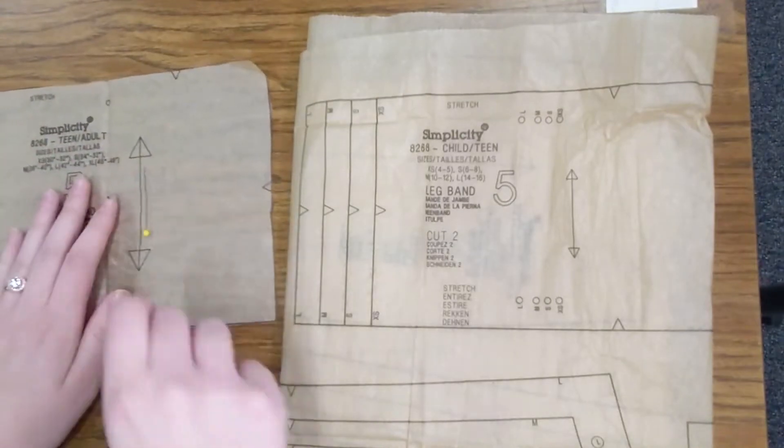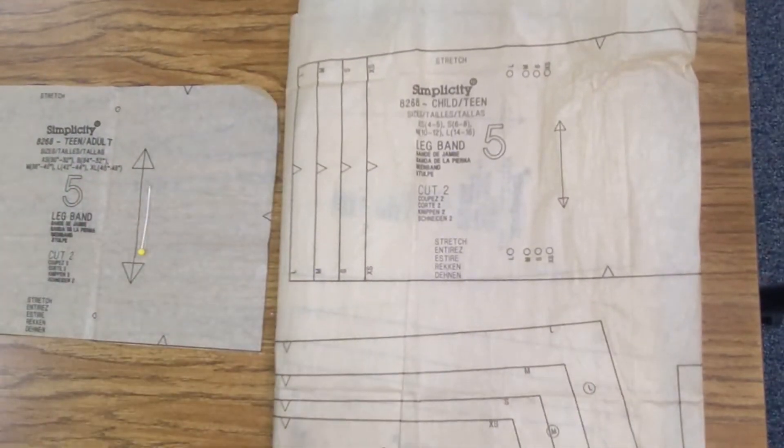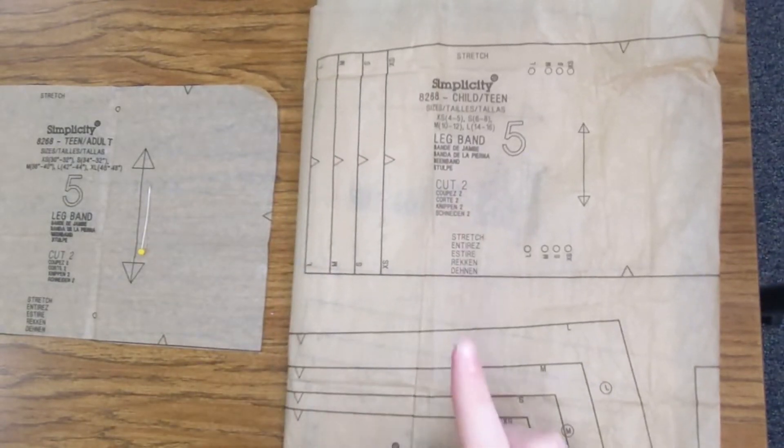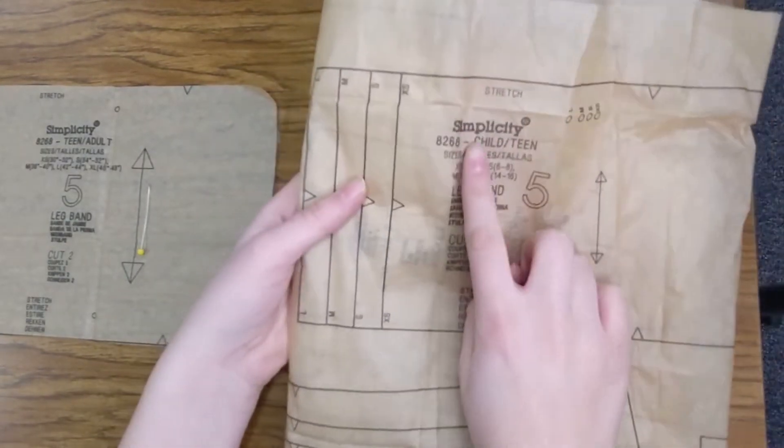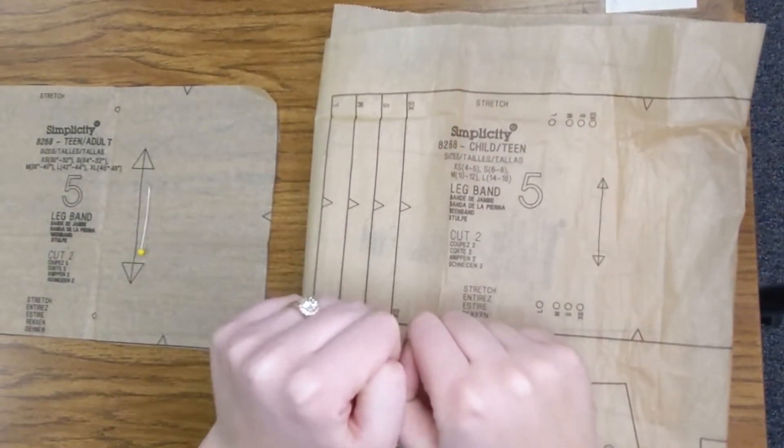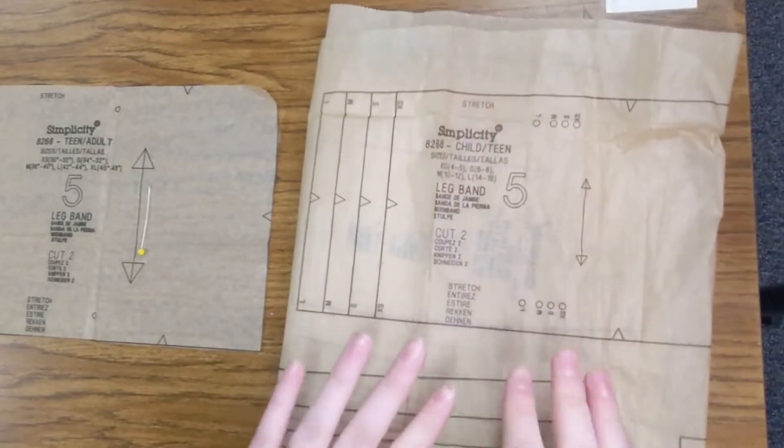Something I should note with the pattern tissue here is that there are two sheets. And one of the sheets is this one right here that says child slash teen. This is a kid's pattern, and it's going to be way too small if you use this pattern. So, go ahead and set this sheet.